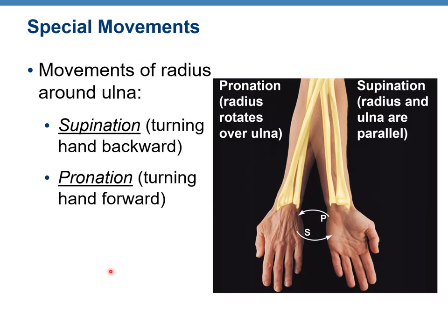Special movements only apply to specific parts of the body. Supination and pronation, for example, are only relative to the radius over ulna. Supination is when your palm is facing up, and pronation is turning the hand down. A helpful memory trick: supination is like holding a bowl of soup — palm up. You turn it over, and that's pronation.